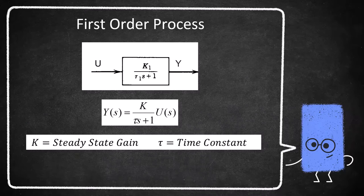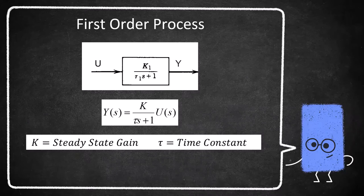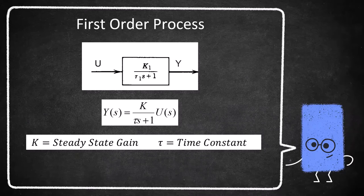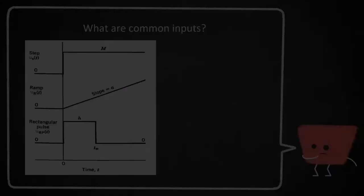Within the transfer function itself, k is the steady-state gain and tau is the time constant. Now, the way various first-order processes differ from each other is through their inputs. In this lecture, we will be going over various common inputs and how to incorporate this into the first-order model.